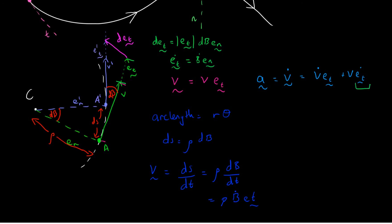So what do we get? Well, the acceleration vector is equal to v dot in the tangential direction, plus v times beta dot in the normal direction, just substituting in for e_t dot equals beta dot e_n.